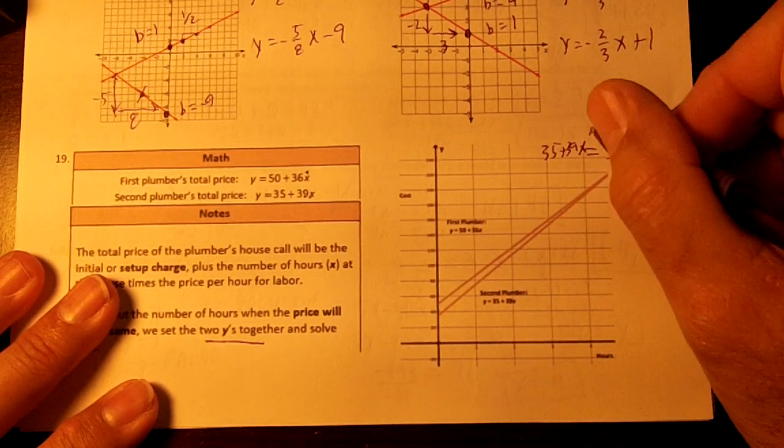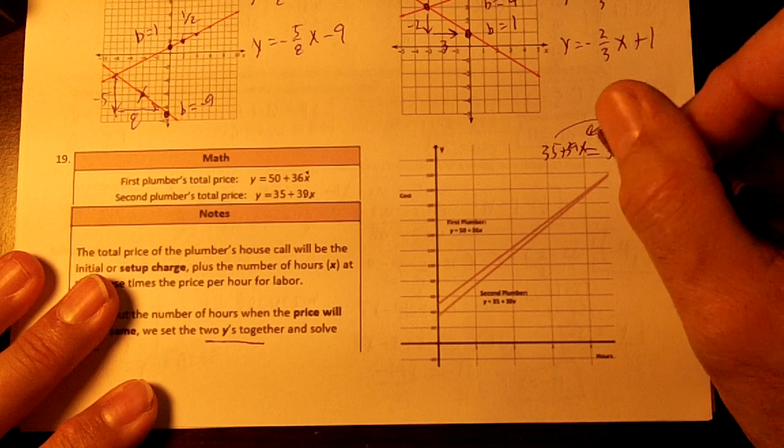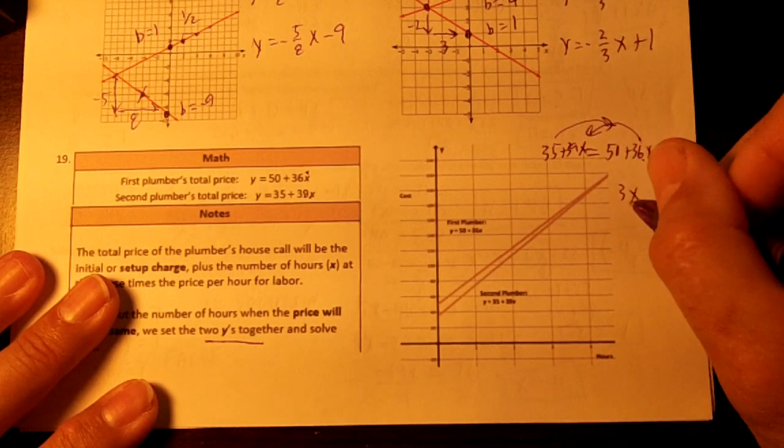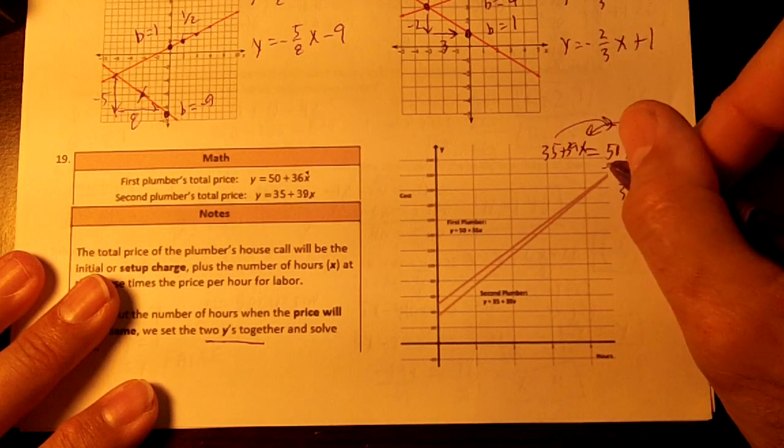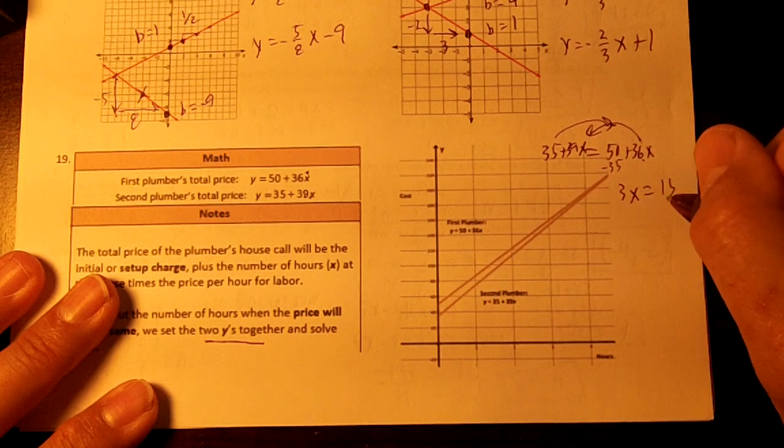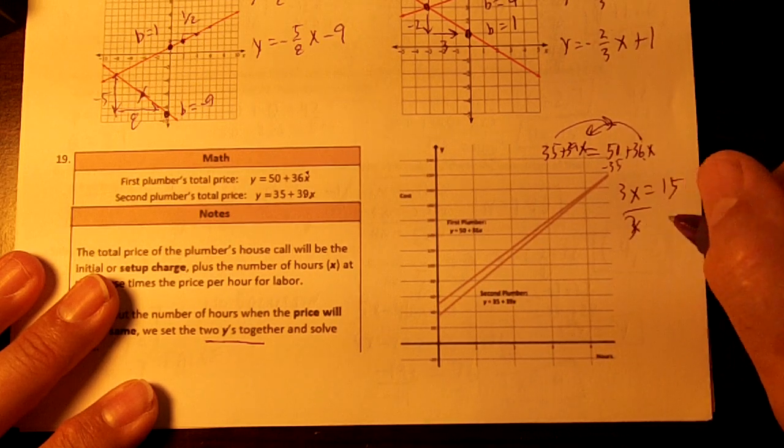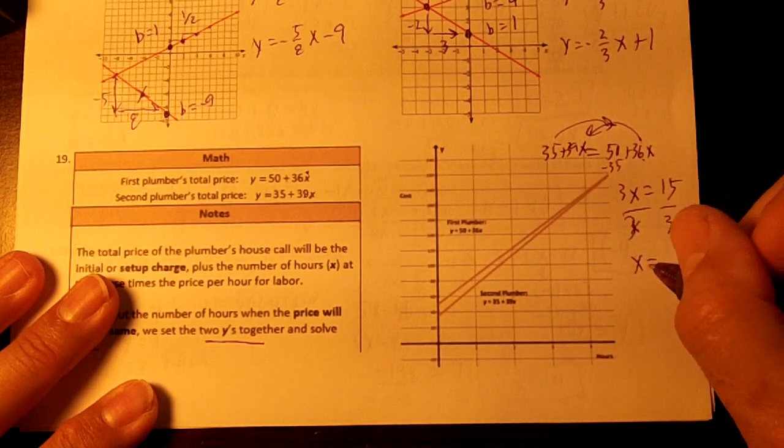So I'm going to move my smallest x. So 39 minus 36 is 3x, and then 50 minus 35 is 15. So divide by 3, so x equals 5.